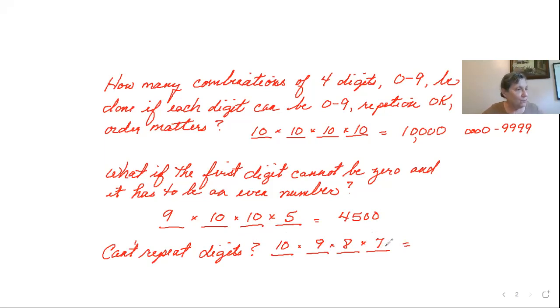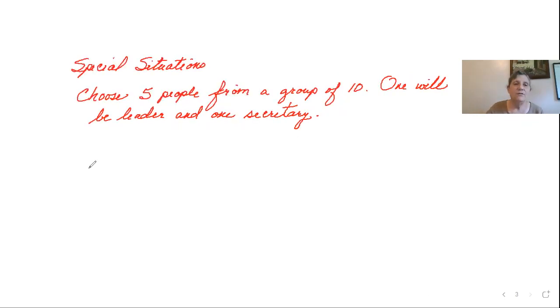And so now we are at 5,040 numbers in the numbers 0 through 9,999 that do not have any of the same two digits. Suppose we have a special situation where, from a group of 10 people, we are going to make a committee of 5 of them. So we're going to choose 5 out of the 10. Of these 5, 1 is going to lead the group and 1 is going to be the secretary to take notes.